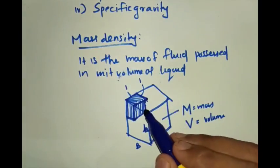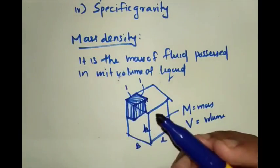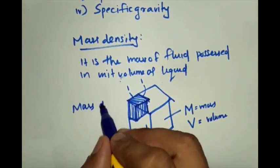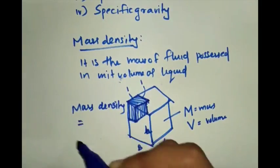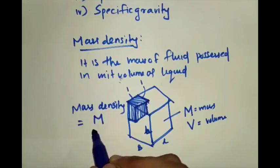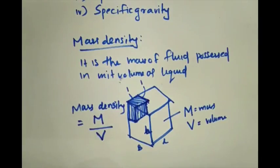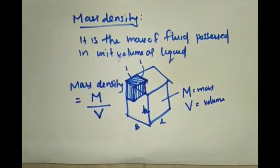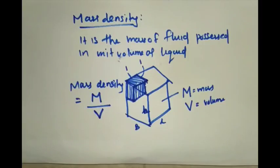The mass in that unit volume is called the mass density of the fluid. Mass density is equal to the total mass of fluid divided by the total volume. Note that mass is the same everywhere — on Earth, on the Moon — mass does not change. It is the amount of matter present, so mass density is constant.